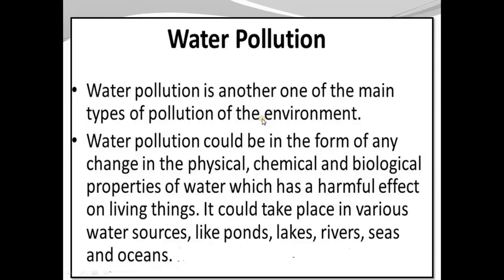Many ordinary things people do in daily life can cause water and air pollution. Water pollution is one of the main types of environmental pollution. It involves any change in the physical, chemical, and biological properties of water that has a harmful effect on living things. It can take place in various water sources like ponds, lakes, rivers, seas, and oceans.